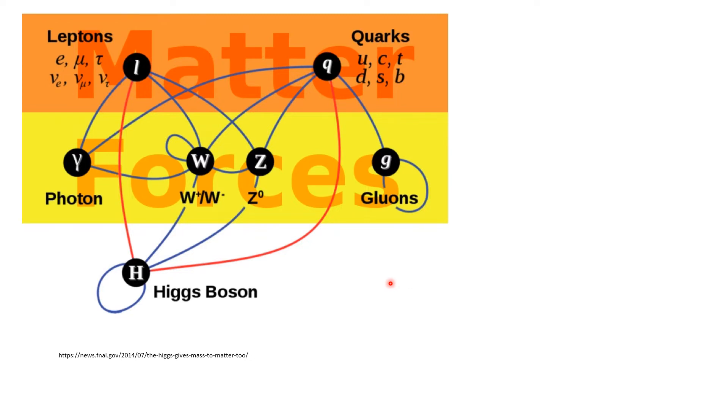That calculation suggested a particle somewhere between 120 and 150 GeV, gigaelectron volts. That's about 120 to 150 times as heavy as the proton. Pretty heavy.